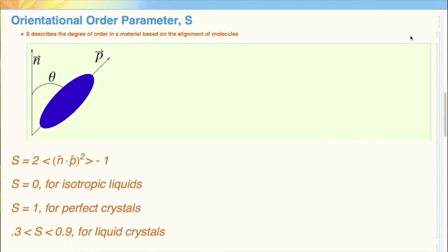One way to characterize a liquid crystal is with its orientational order parameter. N is the director, or the vector which points along the preferred axis of the liquid crystal's molecular orientation. P is the nonpolar vector, which indicates the orientation. Theta is the angle between the n and p vectors.